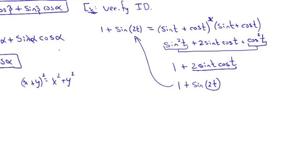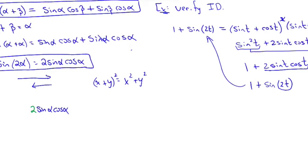One of the more common situations is when you see a product like sine α cosine α without the 2, but you want to force it into the identity form. If I put a 2 in front of it, I've changed the expression, so to balance it I divide by 2 as well. The top becomes sine of 2α and the bottom stays divided by 2, so it equals one-half sine of 2α.